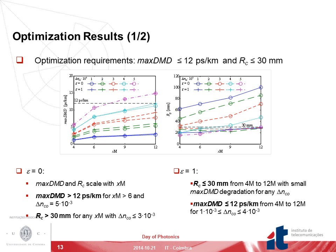Looking at the optimization results: in the left figure we can see the max DMD as a function of the number of modes, and in the right figure the respective curvature radius as a function of the number of modes. Even for 12 modes, we can obtain a max DMD lower than 12 picoseconds per kilometer when considering a ΔNCO equal to or lower than 4×10⁻³. For epsilon equal to 0, RC is much higher than 30 millimeters, but when considering epsilon equal to 1, RC is always lower than 30 millimeters. There is no significant difference between epsilon equal to 0 and epsilon equal to 1 for max DMD, so the RC requirement has negligible impact on the max DMD results.